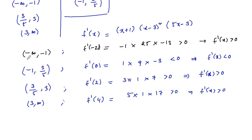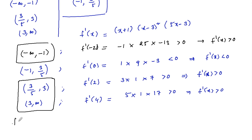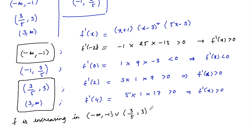Finally, we conclude: f is increasing on (−∞, −1) ∪ (3/5, 3) ∪ (3, +∞). The given function is decreasing on the interval (−1, 3/5).